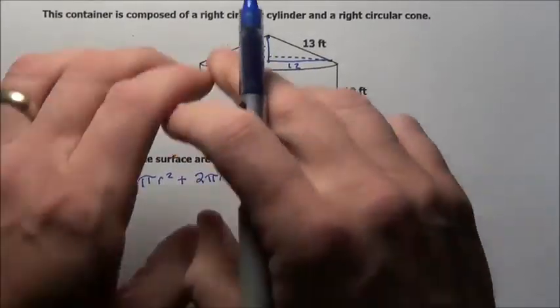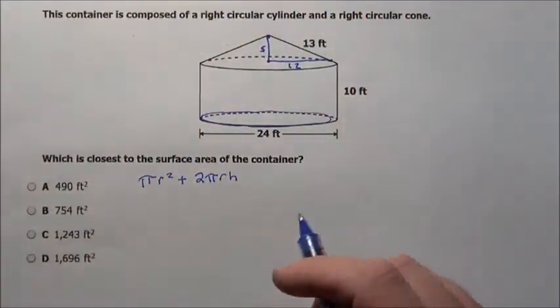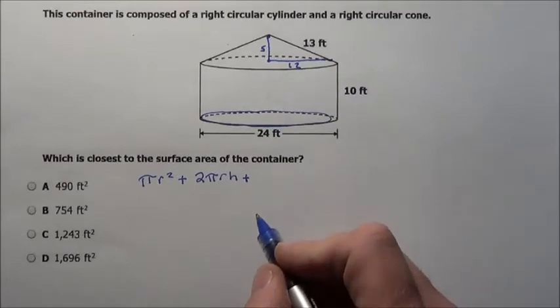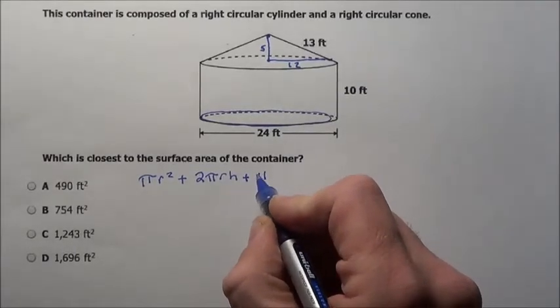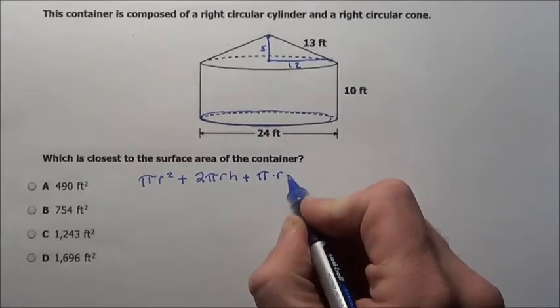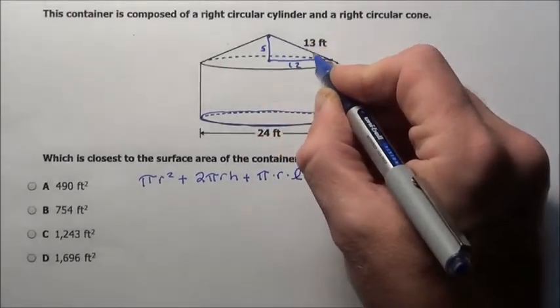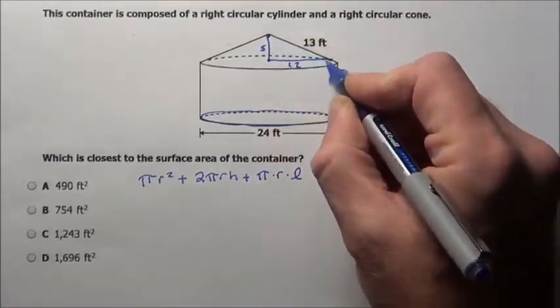So I just need it for the cone, just the outer part of the cone. So that's the lateral area of it, which the formula for that, if you look at your sheet, it says pi times the radius times the lateral slant height.